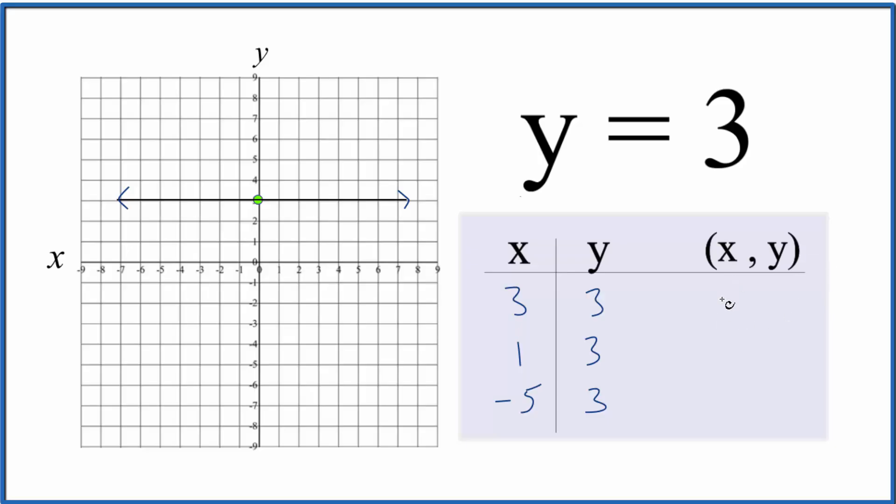So these points here should fall on the line for y equals 3 that we came up with initially. We have x is 3, y is 3, and we go to the point (3, 3). x is 1 and y is 3, so we go to (1, 3).